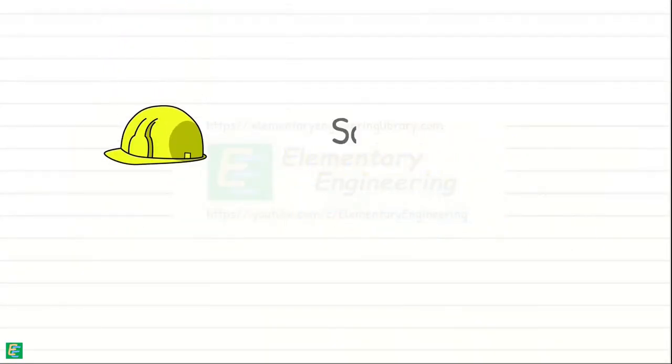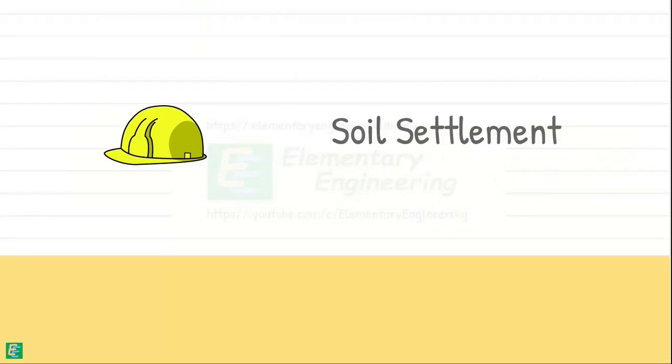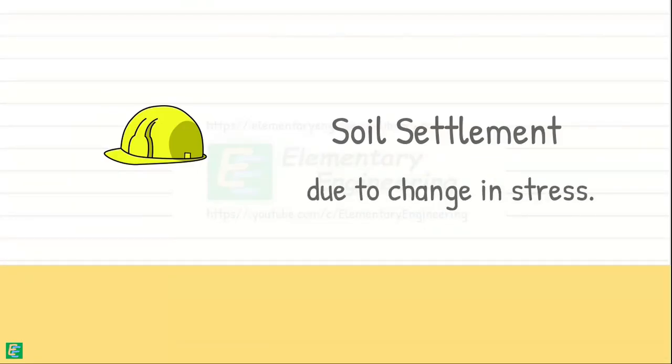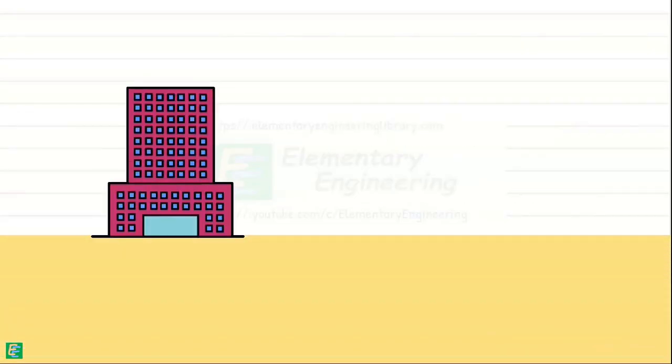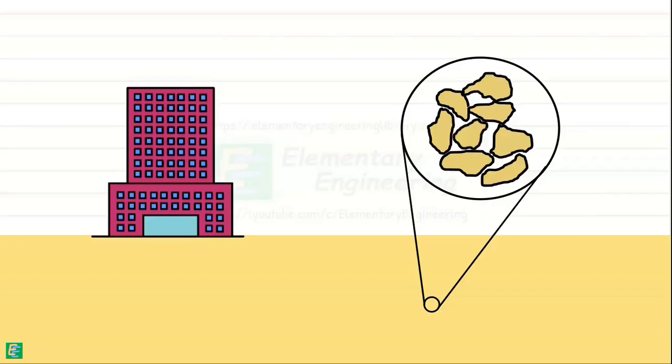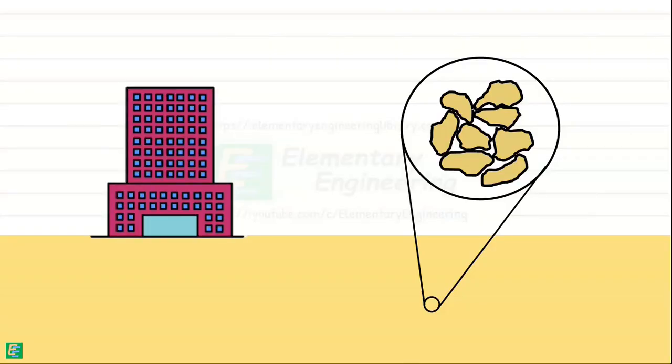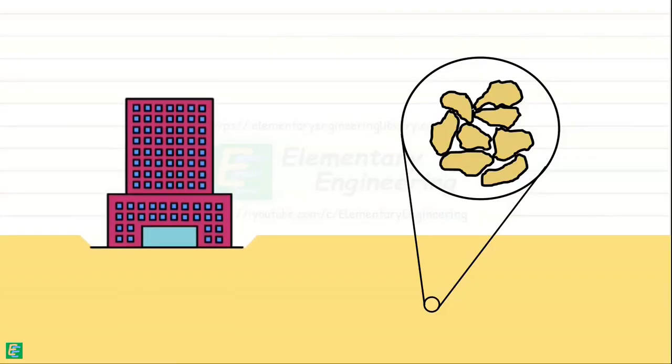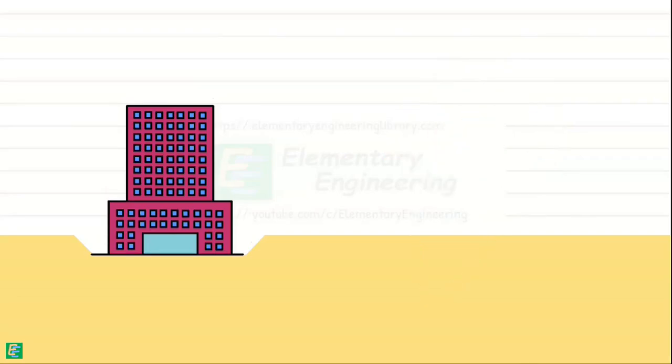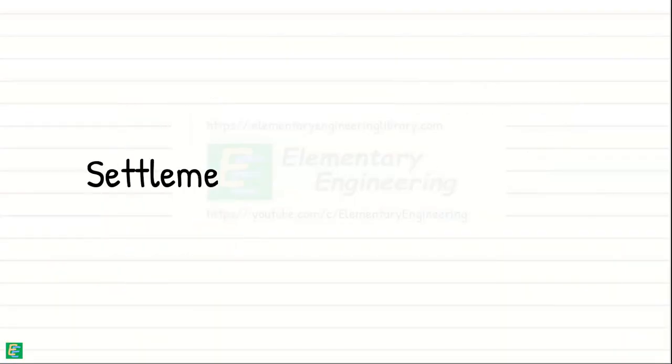Technically, soil settlement refers to the downward movement of soil due to changes in stresses acting on it. When a load is applied to the soil, the soil particles compress and rearrange, causing a decrease in the volume of void spaces within the soil. This compression leads to settlement, which can occur immediately after construction or gradually over time.